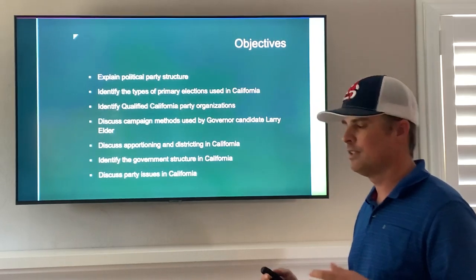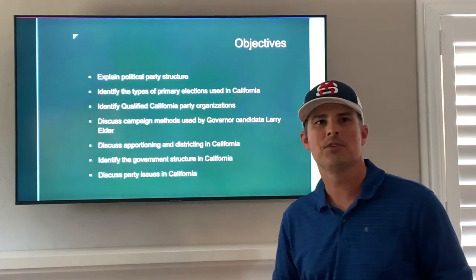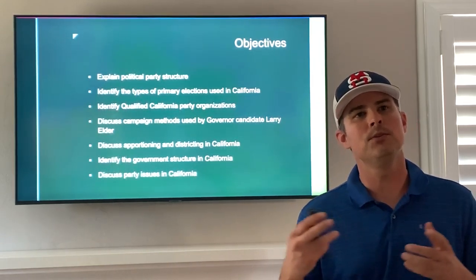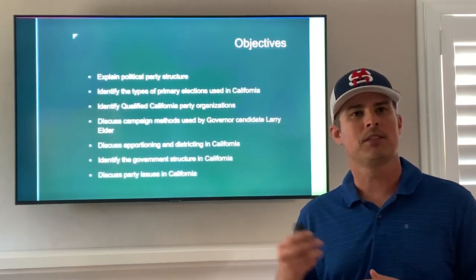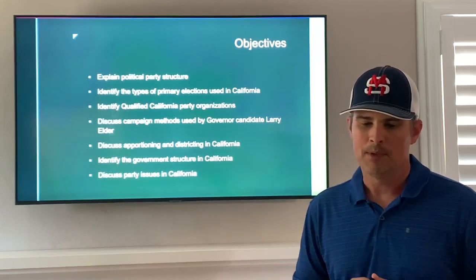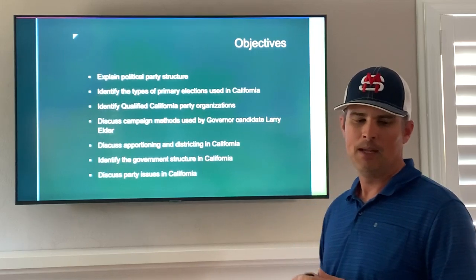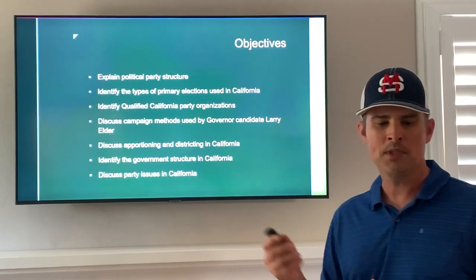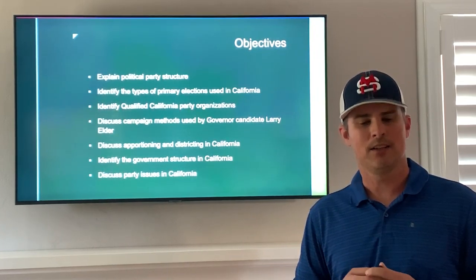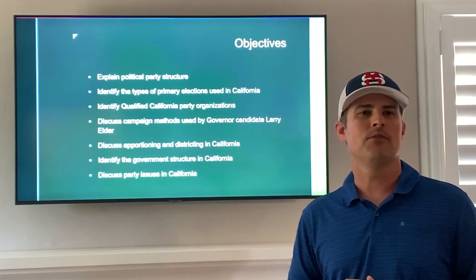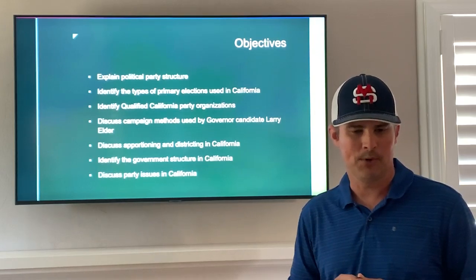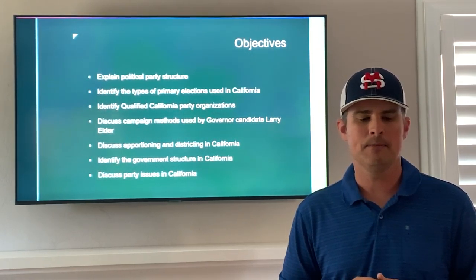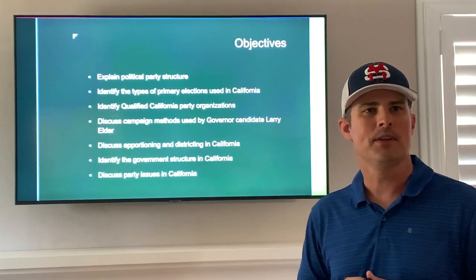My hope is by the end of this presentation that you'll be able to explain the political party structures — we're going to focus on the Republican and Democratic Party structures — identify the types of primary elections used in California, including primary elections for voter-nominated office positions like the governor position and the president of the United States. We're also going to identify qualified California party organizations, discuss campaign methods used by Governor candidate Larry Elder, who is the current front-runner in the recall election here in California, discuss apportioning and districting, identify the government structure, and discuss some party issues.